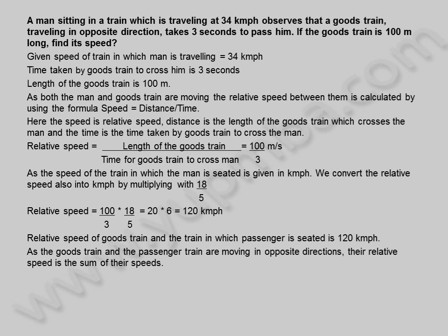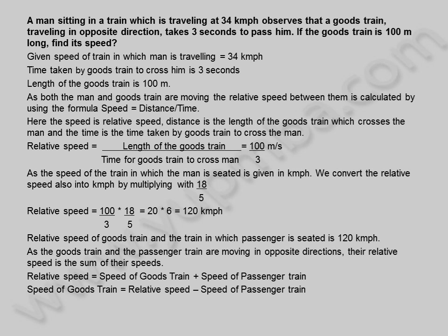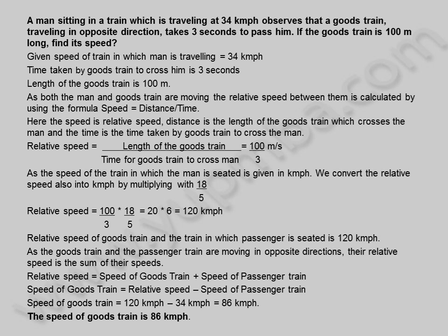As the goods train and the passenger train are moving in opposite directions, their relative speed is the sum of their speeds. Speed of goods train is equal to relative speed minus speed of passenger train, which is 120 kilometers per hour minus 34 kilometers per hour, equal to 86 kilometers per hour. The speed of goods train is 86 kilometers per hour.